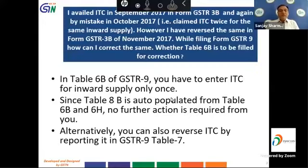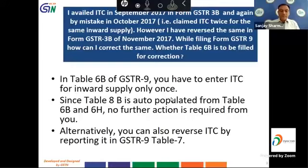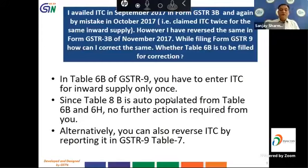One of the questions received was: I have availed ITC in the month of September 2017 in form GSTR 3B, but by mistake I availed it again in October 2017 — meaning ITC was claimed twice for the same inward supply. The taxpayer reversed the same in GSTR 3B in November 2017. The question is: while filing GSTR 9, how can he correct this?